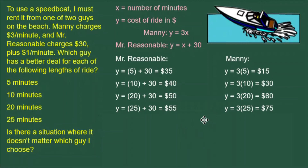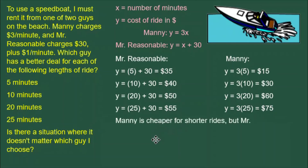Plugging the values into X in the two equations is routine and repetitive, but it tells us a lot. We can see that for the smaller numbers of minutes, Mr. Reasonable costs quite a bit more than Manny, and Manny gives a better deal. But for the higher numbers of minutes, Mr. Reasonable starts to cost less than Manny, and he gives the better deal. So Manny is cheaper for shorter rides and Mr. Reasonable is cheaper for longer rides.